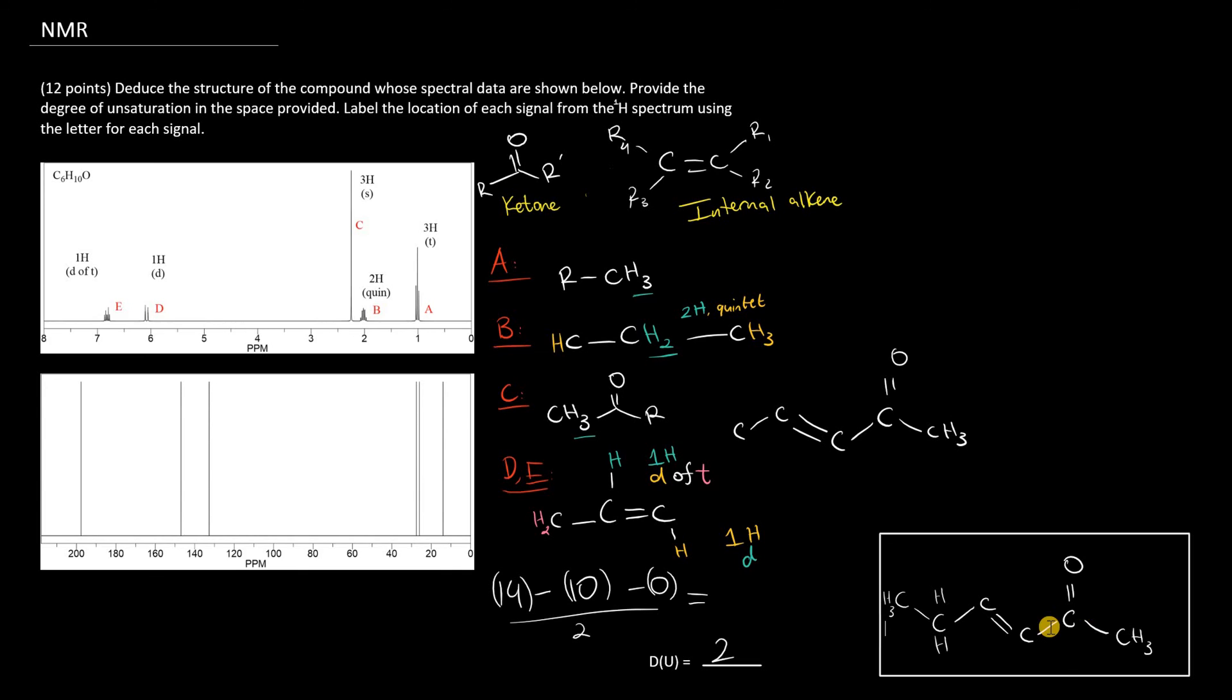So, let's make sure we did this right. Signal C is a 3H singlet, right here. No adjacent hydrogens. Signals A and B are the ethyl group, 3H triplet, right here. 2H quintet, okay. Four hydrogen neighbors.